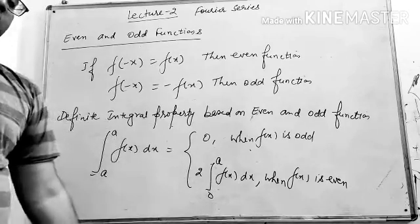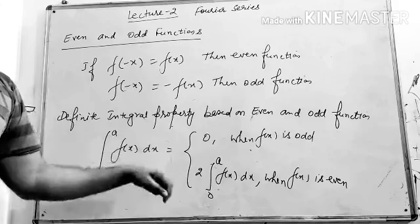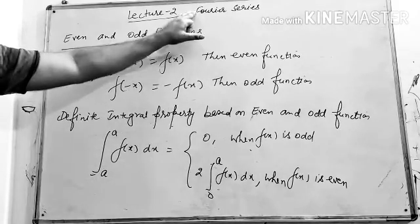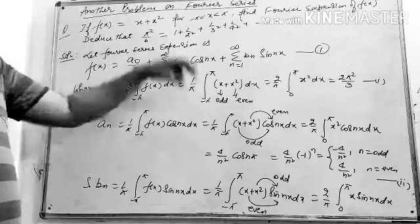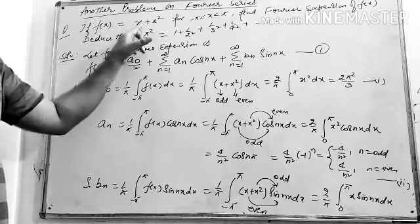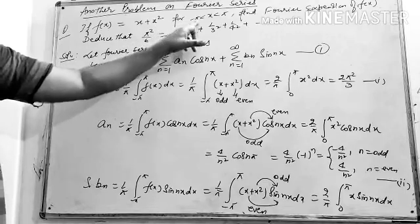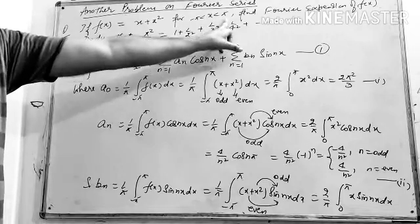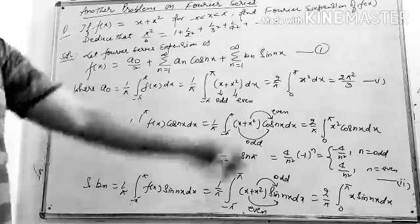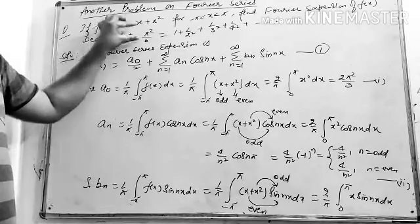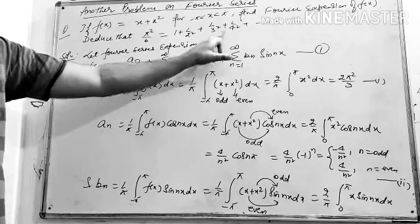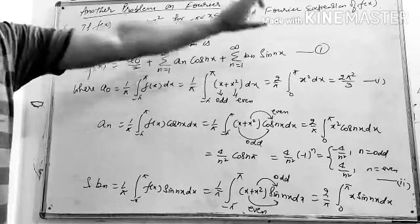Now we will move on to a basic problem based on even and odd phenomena for the Fourier series. The problem is: if f(x) = x + x², for x between −π to π, find the Fourier expansion of f(x), and hence deduce that π²/6 = 1 + 1/2² + 1/3² + 1/4² and so on.